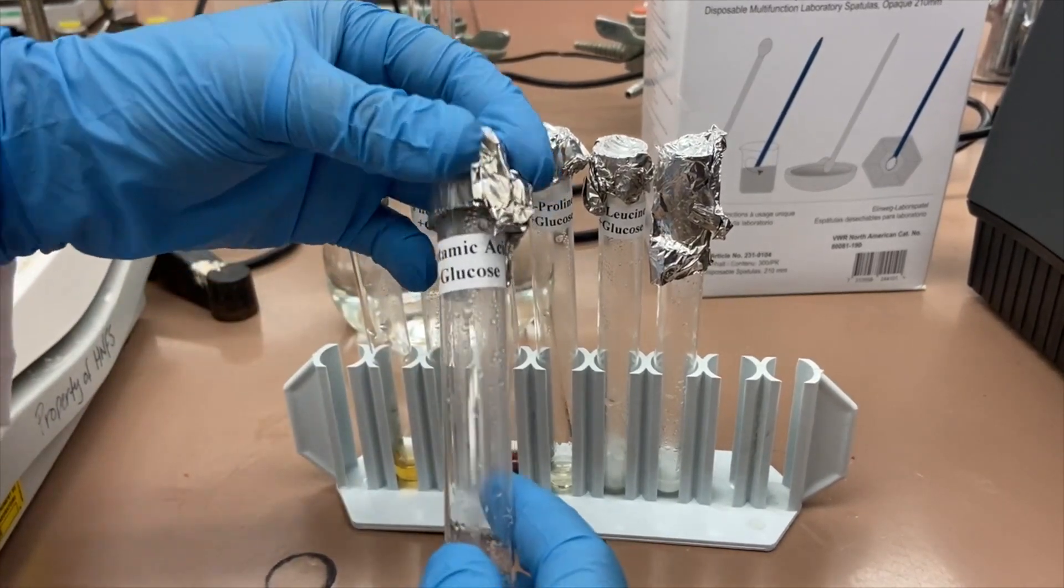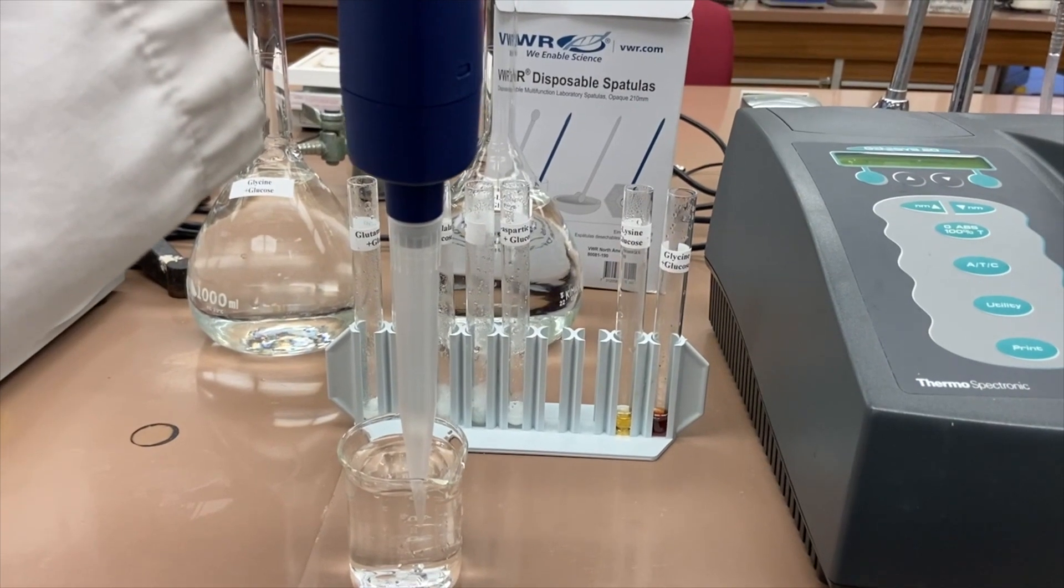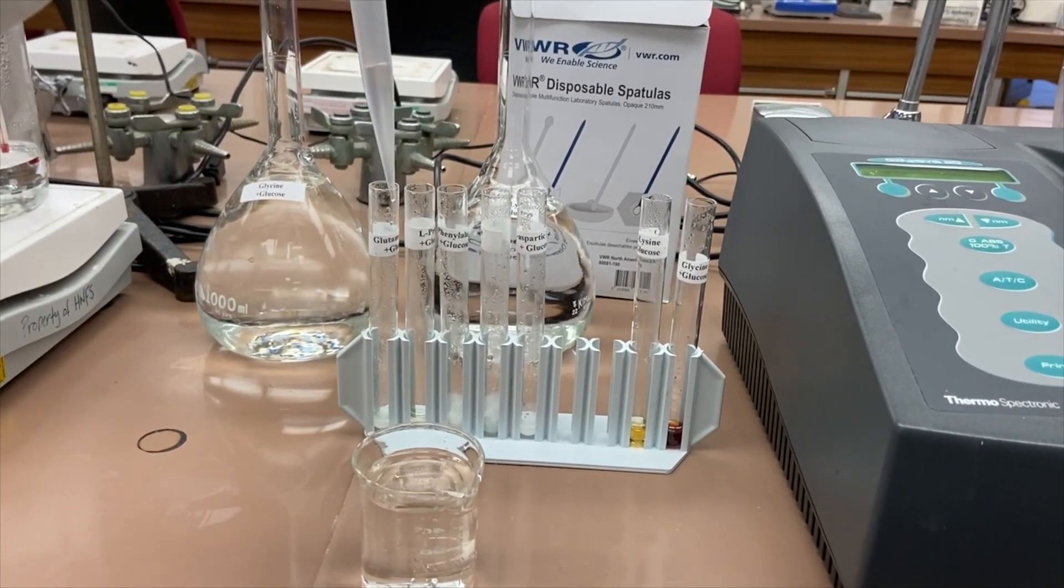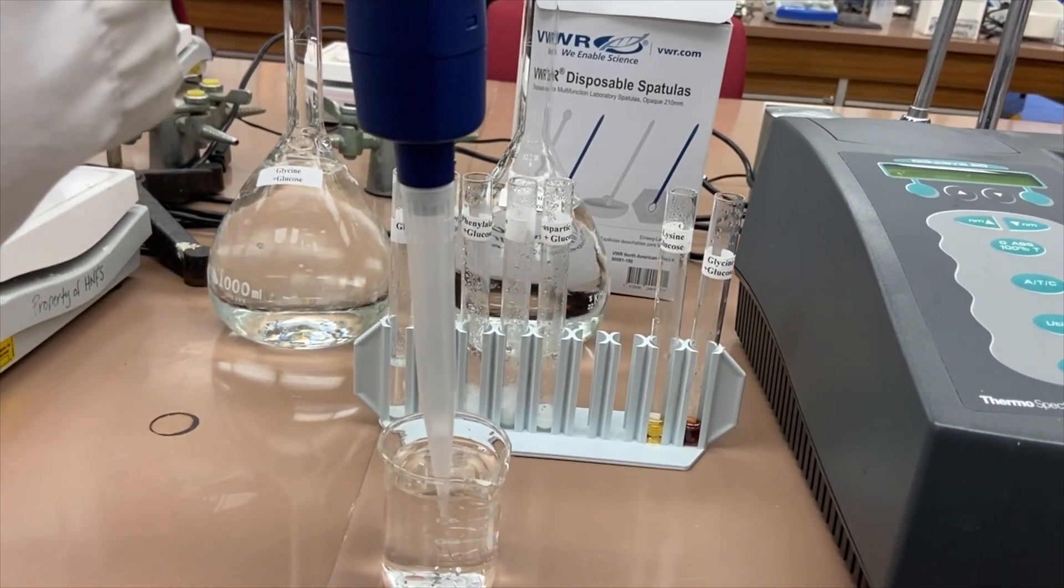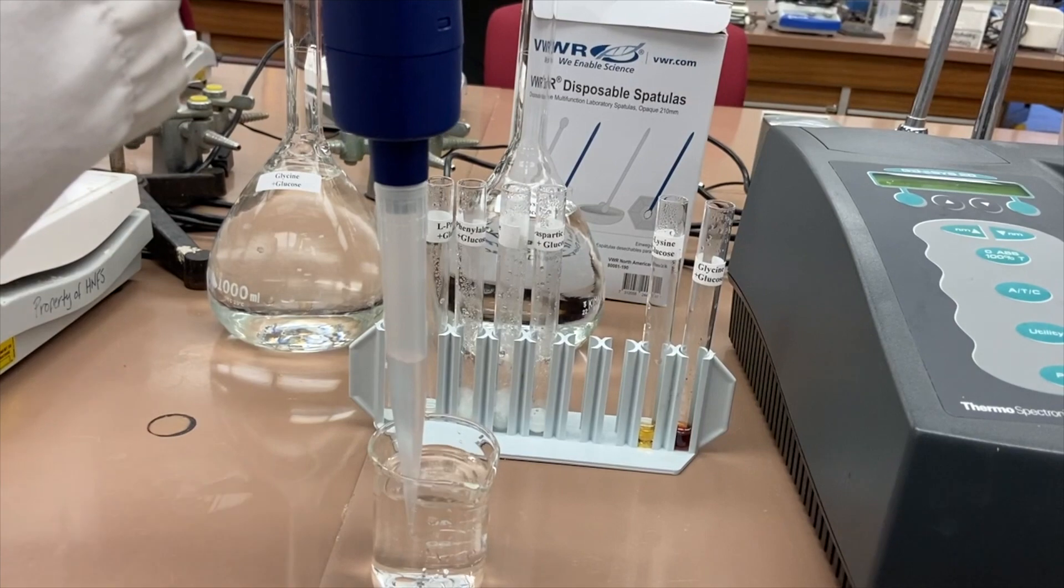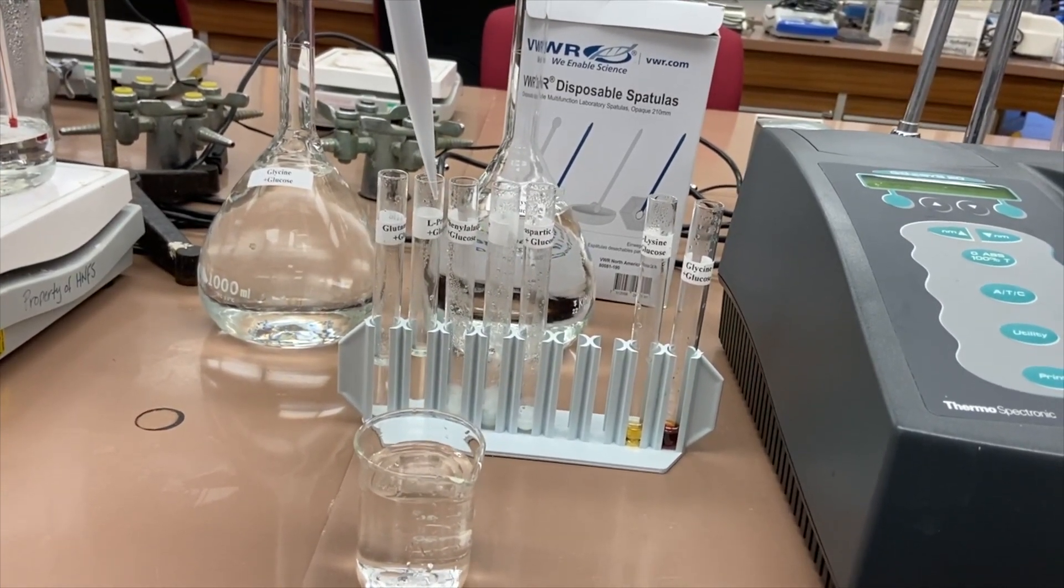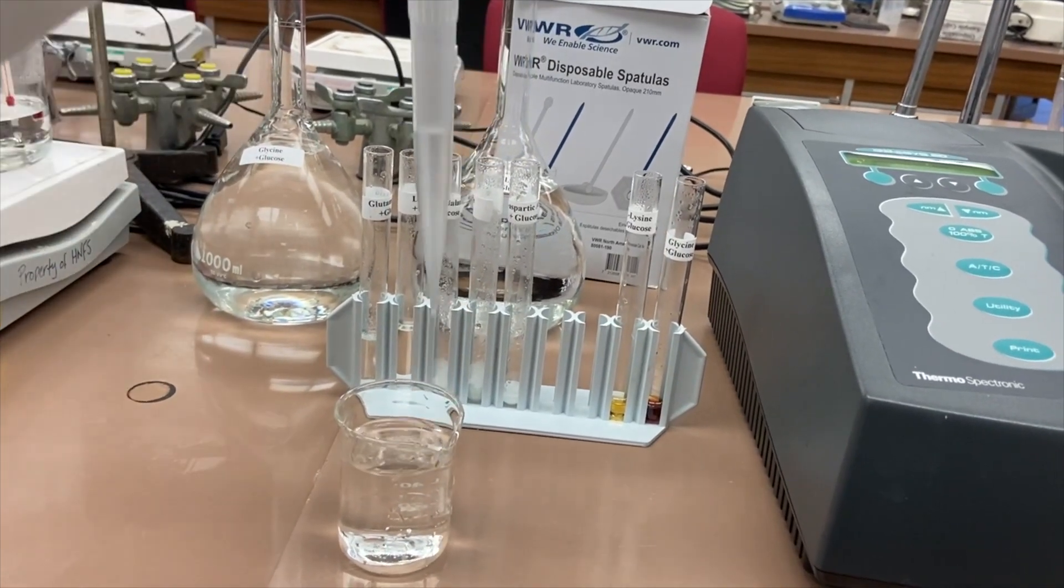Right now I'm going to dilute each test tube with 4 ml of DI water, except lysine and glycine which I'm going to dilute with 1000 ml. Right now I'm diluting with 4 ml which will make the total 5 ml.